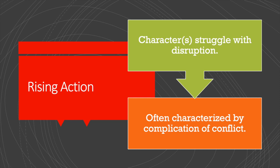Rising action is the present action of the story. Something has happened to disrupt the world as it was, and now the character or characters have to deal with it. As I mentioned with ground situation, rising action does not have to come in the order that the linear diagram seems to imply, and it doesn't have to come in one unbroken stretch.